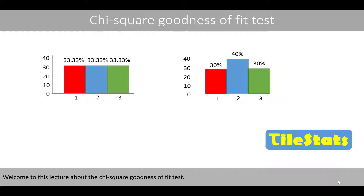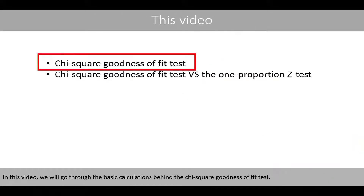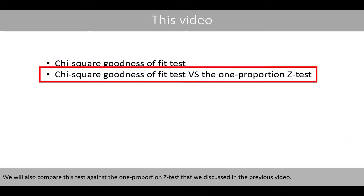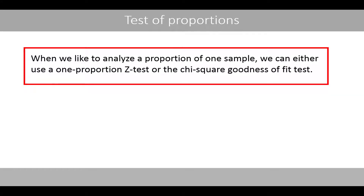Welcome to this lecture about the chi-square goodness of fit test. In this video we'll go through the basic calculations behind the chi-square goodness of fit test. We'll also compare this test against the one-proportion z-test that we discussed in the previous video. When we like to analyze the proportion of one sample, we can either use the one-proportion z-test or the chi-square goodness of fit test.